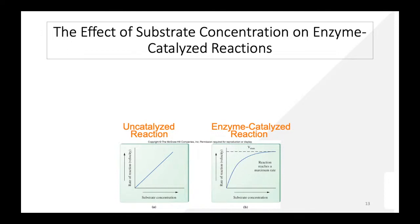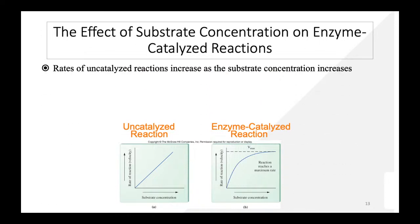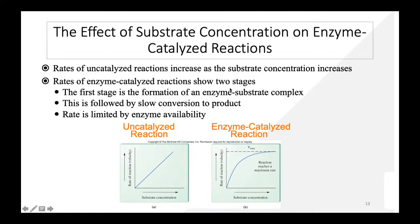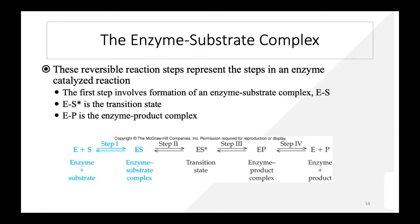The rate of uncatalyzed reactions increases linearly with substrate concentration. For enzyme-catalyzed reactions, the rate increases with substrate concentration but shows a hyperbolic graph, eventually reaching a maximum rate called Vmax — the saturation point. Enzyme-catalyzed reactions show two stages: first, formation of the enzyme-substrate complex, followed by slow conversion to product. The rate is limited by enzyme availability.